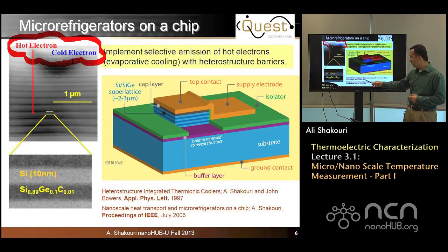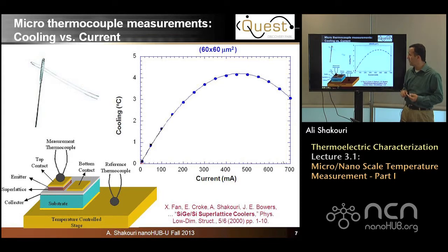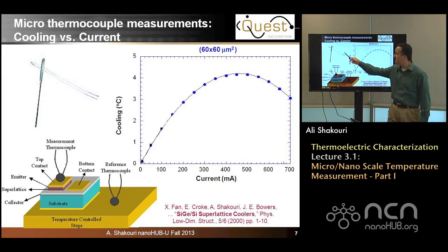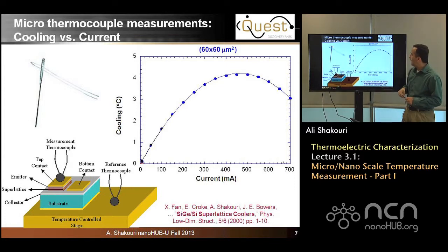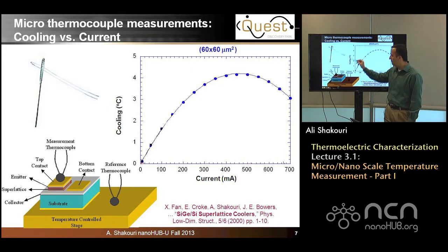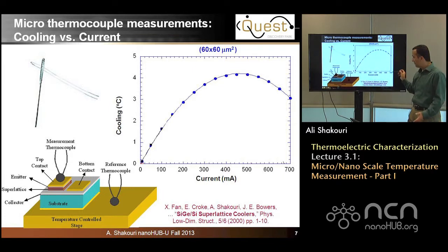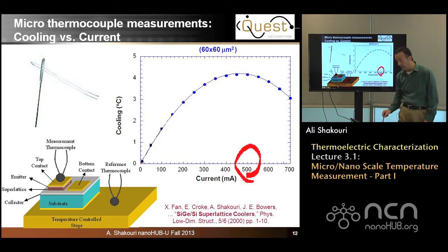This device was first introduced in 1997, and this is a review article from 2006 about its performance. The easiest way to measure temperature is by using a thermocouple. This is a picture of a microthermocouple — you can see it can go through the hole of a needle. They are very small, so they are very fragile and hard to manipulate, but carefully you can put one on top of the device and another on a reference. By measuring a differential measurement, here is the cooling measured on the device versus applied current. First of all, you can see currents are quite large — on the order of 500 milliamps, half an amp.